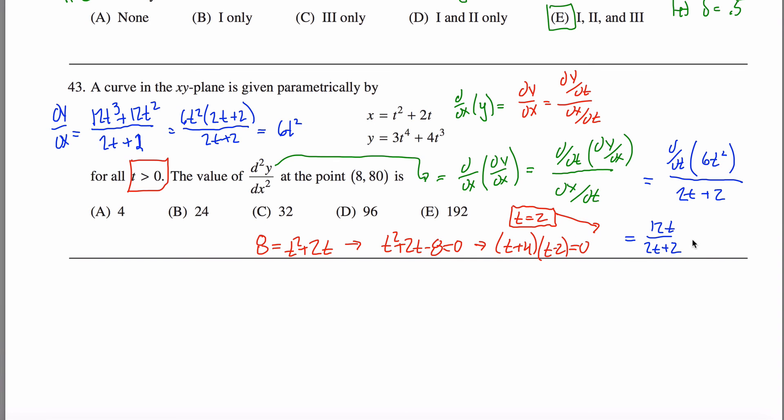If I have t equal to 2, I can plug this in right here and get 12 times 2 is 24 divided by 2 times 2 is 4 plus 2 more is 6. 24 sixth is just 4, which is answer A right here.